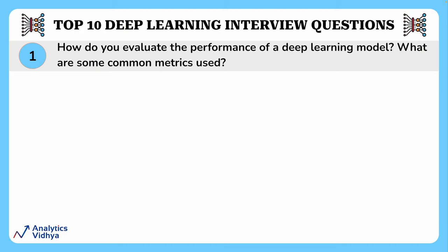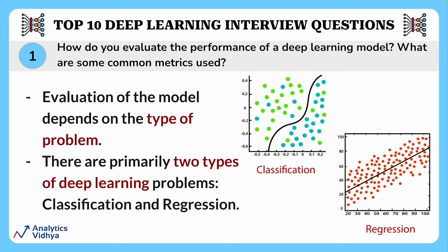This question asks how you evaluate the performance of a deep learning model and what are the metrics used for it. To evaluate the performance of a deep learning model, we use various metrics but that mainly depends on the type of the problem. For a classification problem, it will be one metric and for a regression, it will be a different metric. Let's look at the metrics that are used.